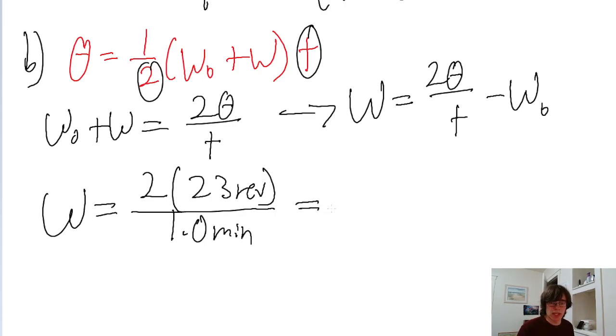If we put this into a calculator, we end up with 46 revolutions per minute, which is the same answer numerically that we had for part A.